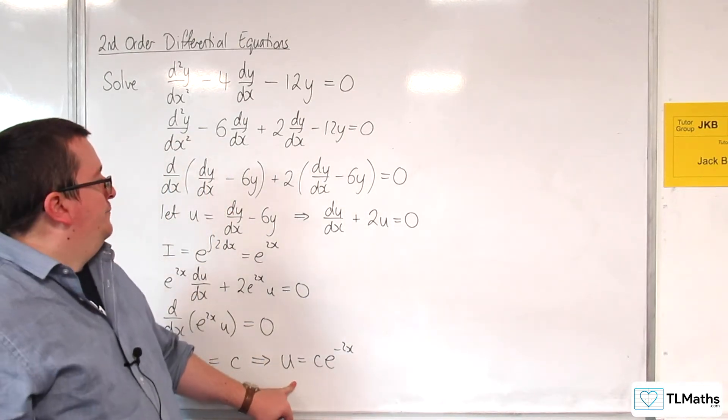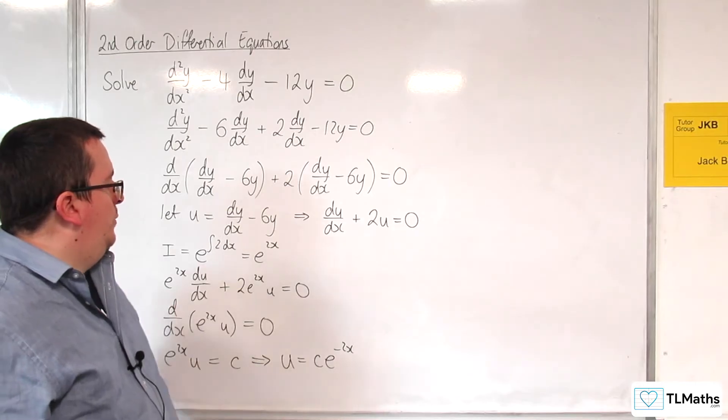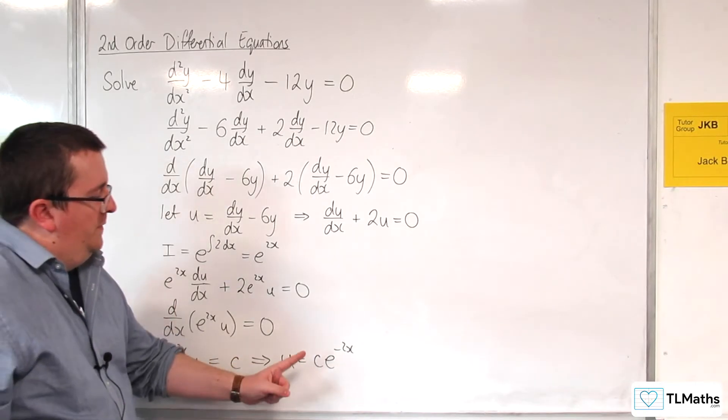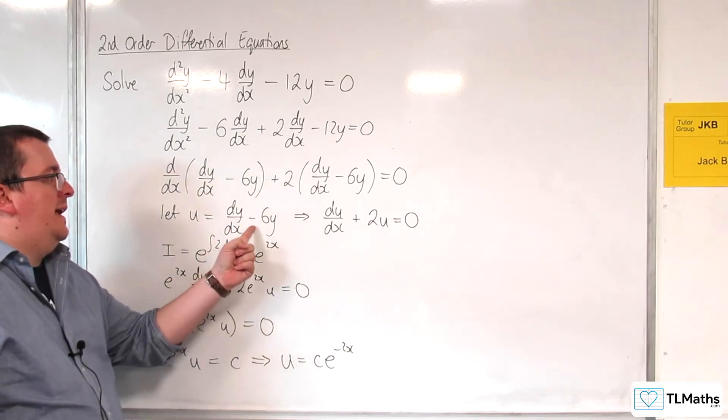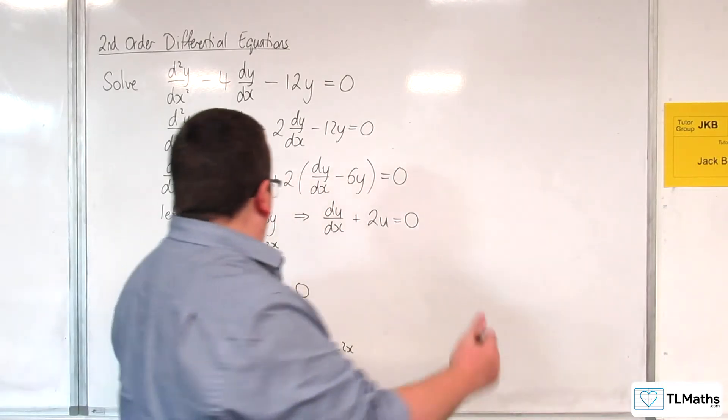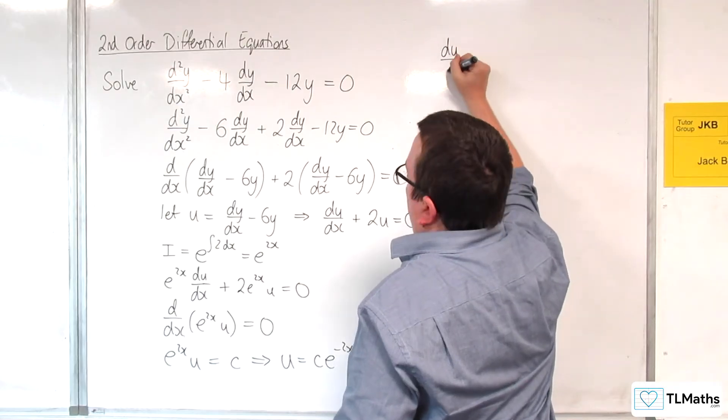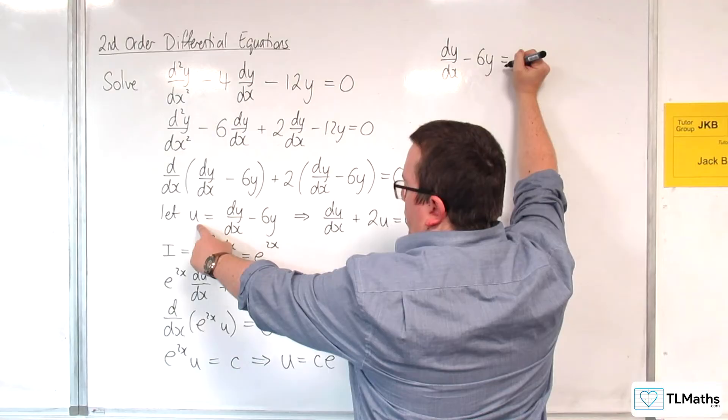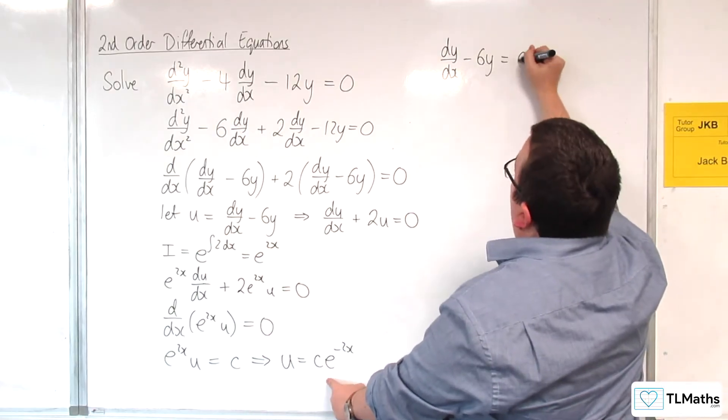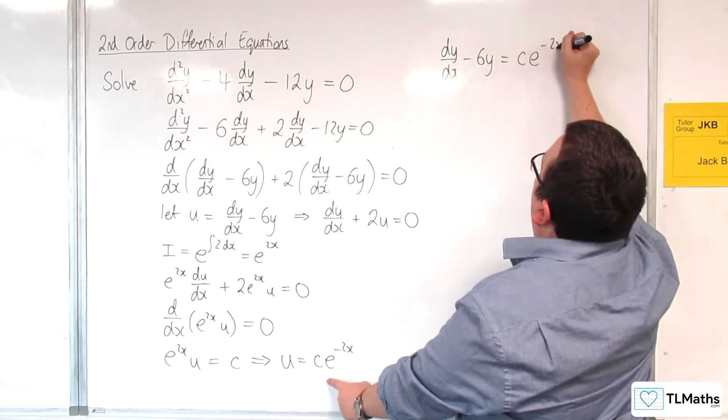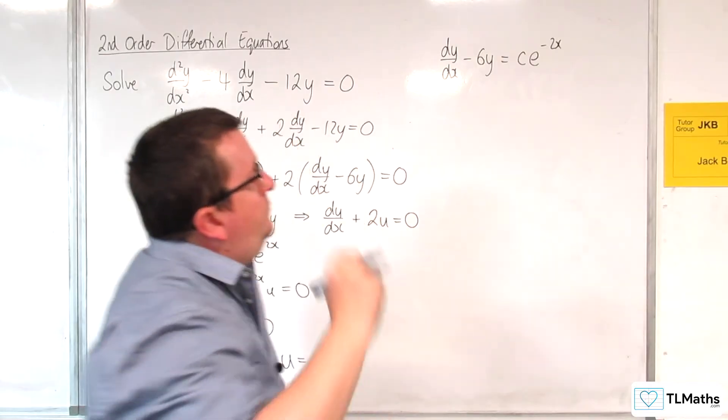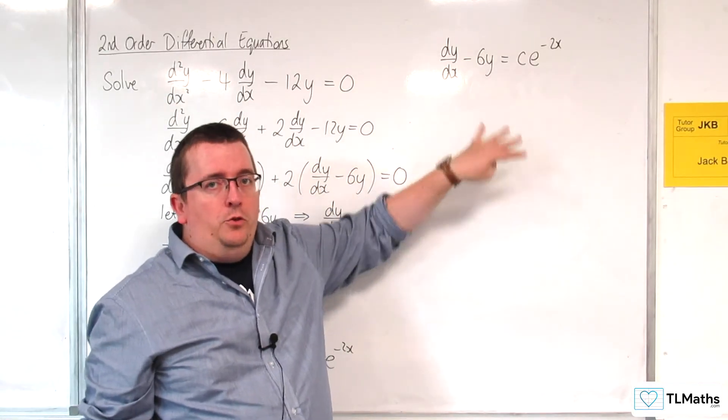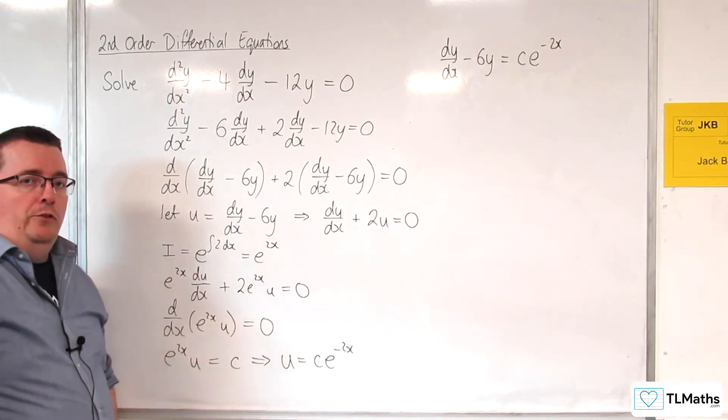So that's where I'm currently at. I've now got u = ce^(-2x). So let's put that back into here. So I've now got that dy/dx - 6y is equal to u, which I've now worked out as ce^(-2x). So we now have a first-order differential equation, which I can solve.